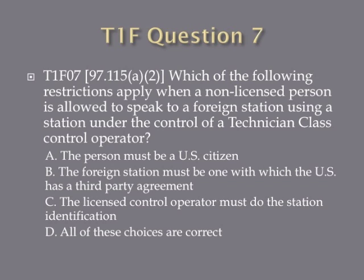Question seven. Which of the following restrictions apply when a non-licensed person is allowed to speak to a foreign station using a station under the control of a technician class control operator? A, the person must be a U.S. citizen. B, the foreign station must be one with which the U.S. has a third-party agreement. C, the licensed control operator must do the station identification. D, all of these choices are correct.